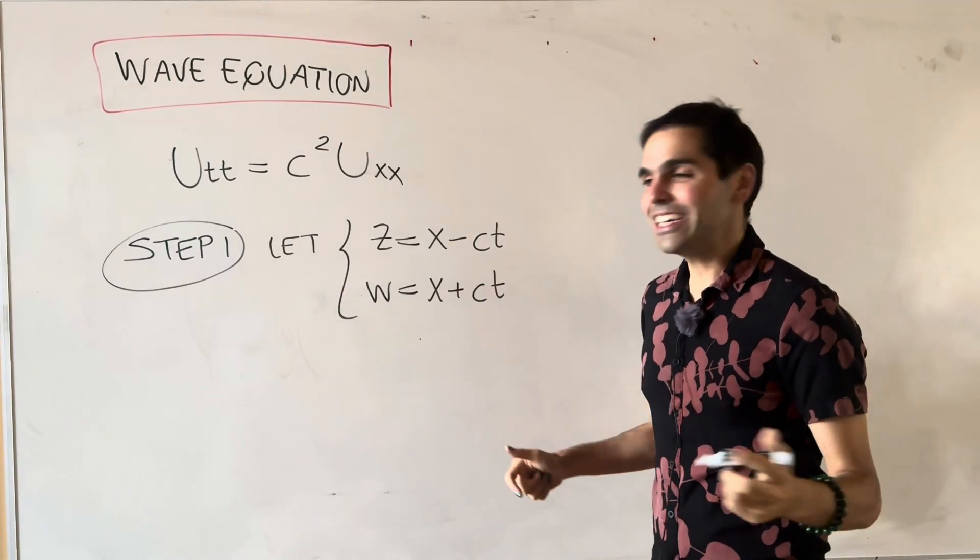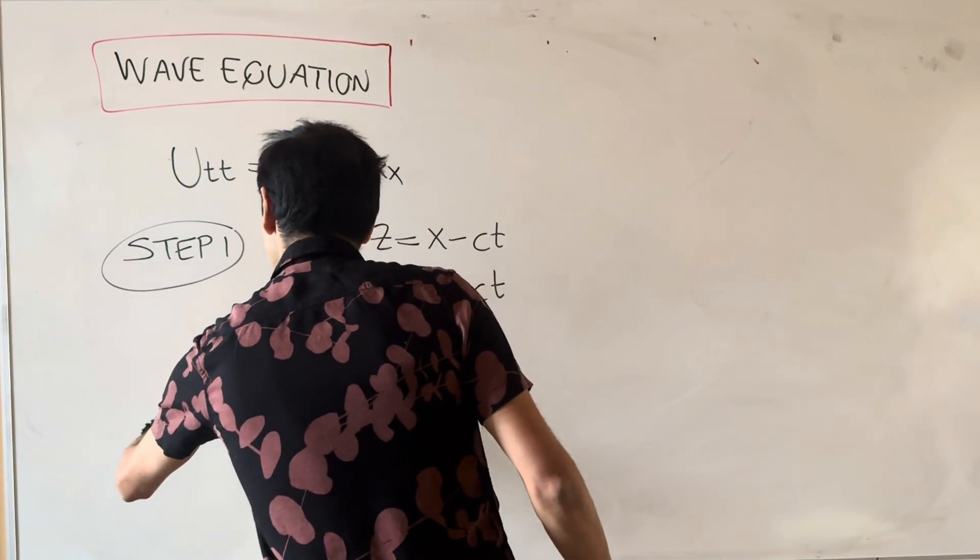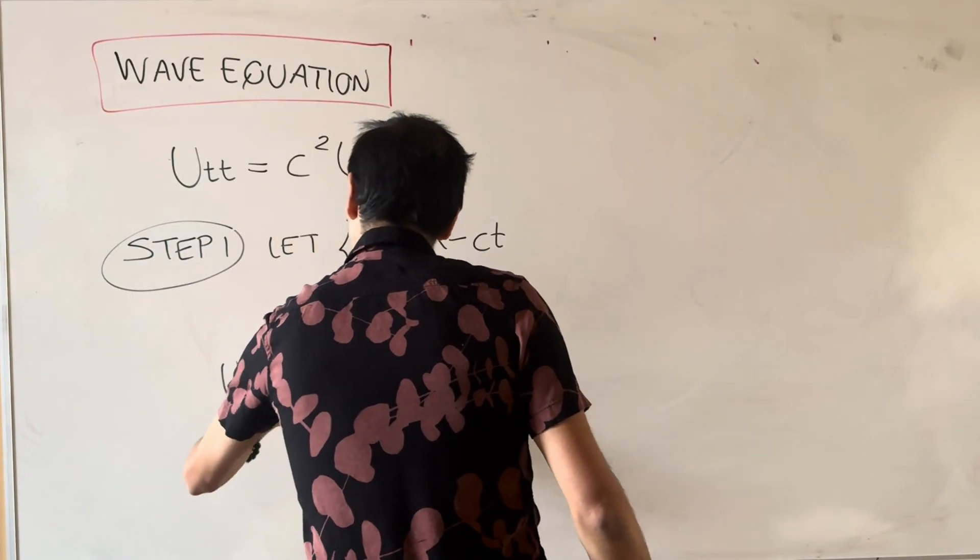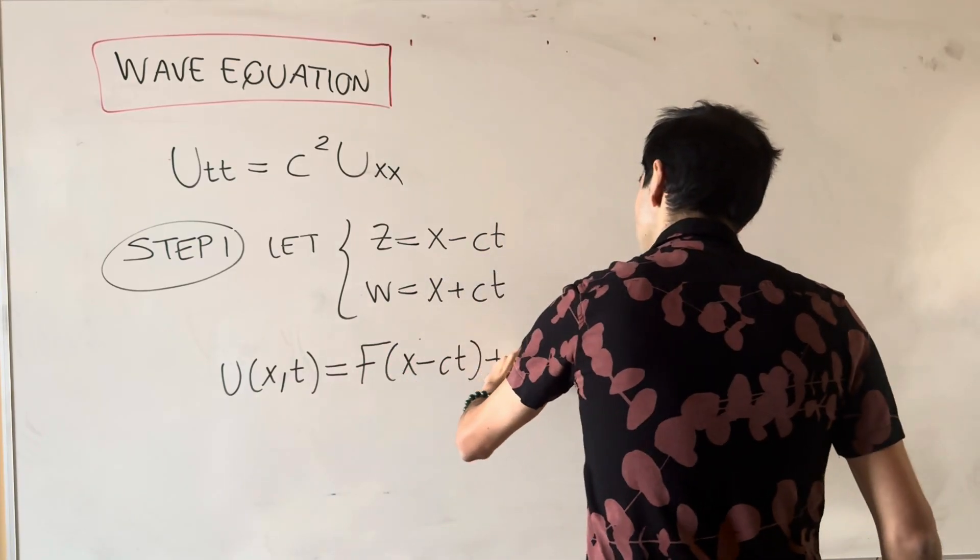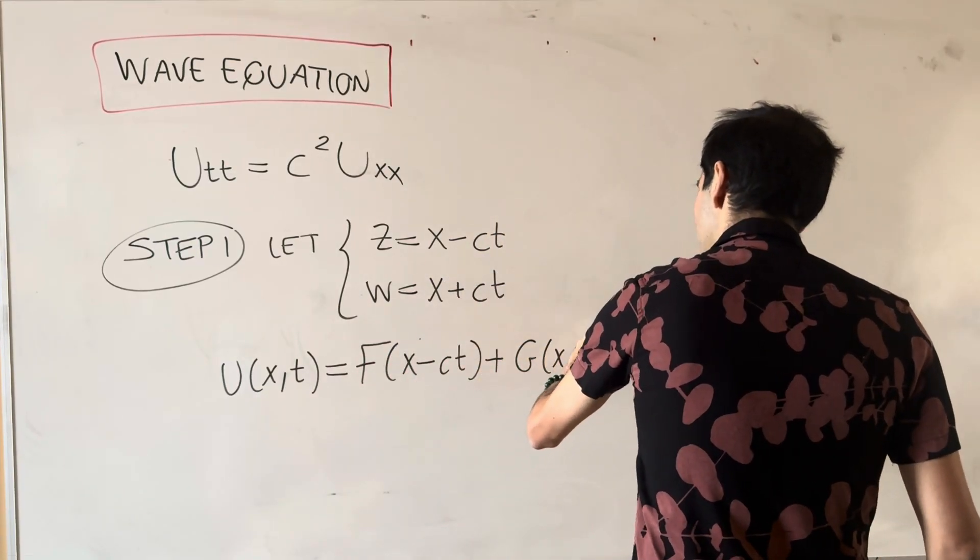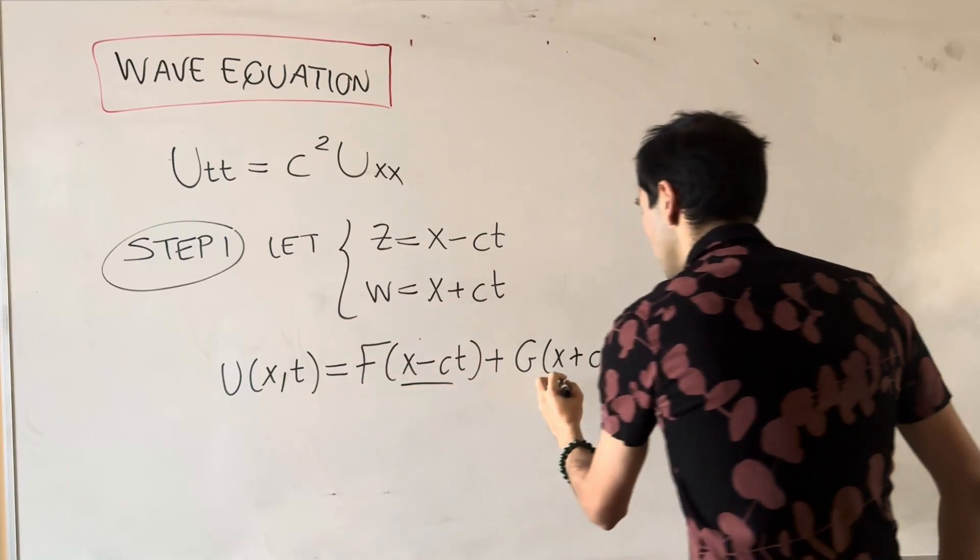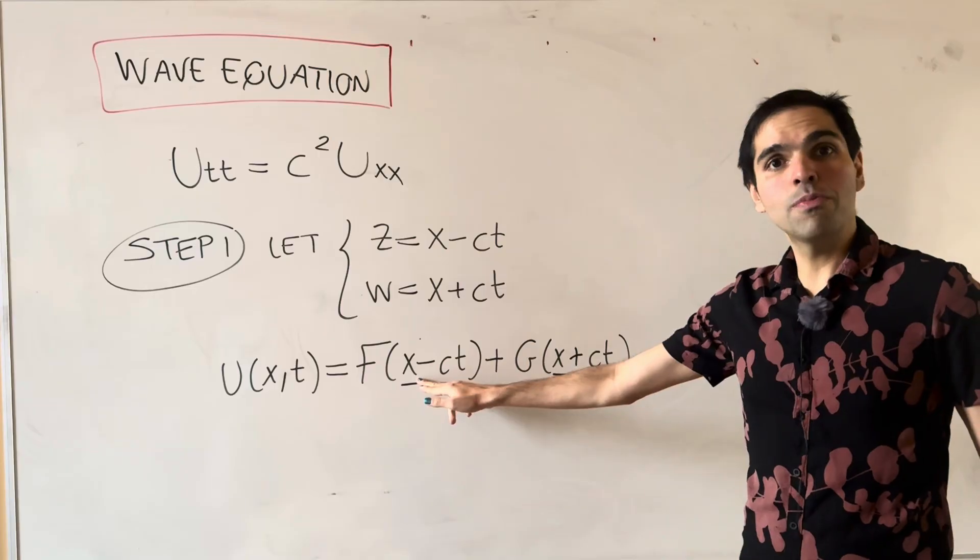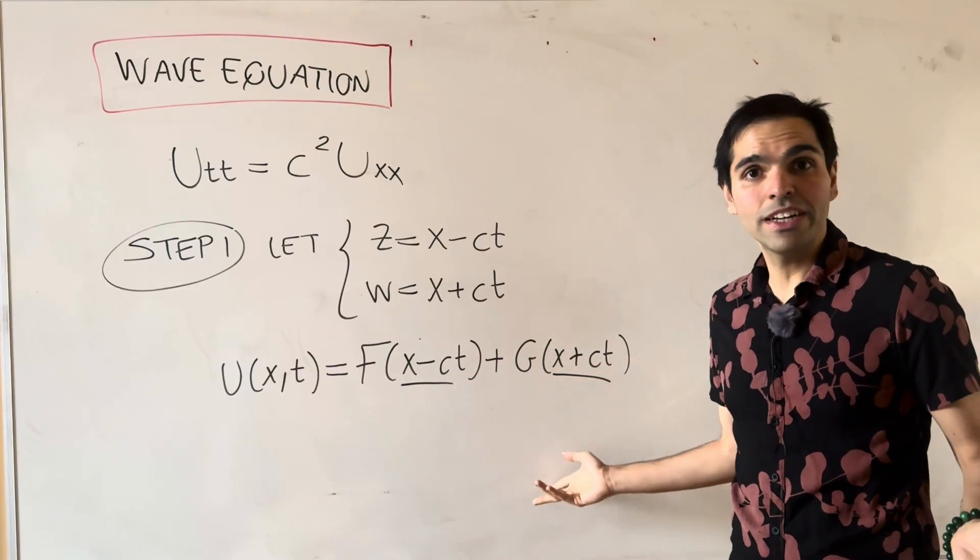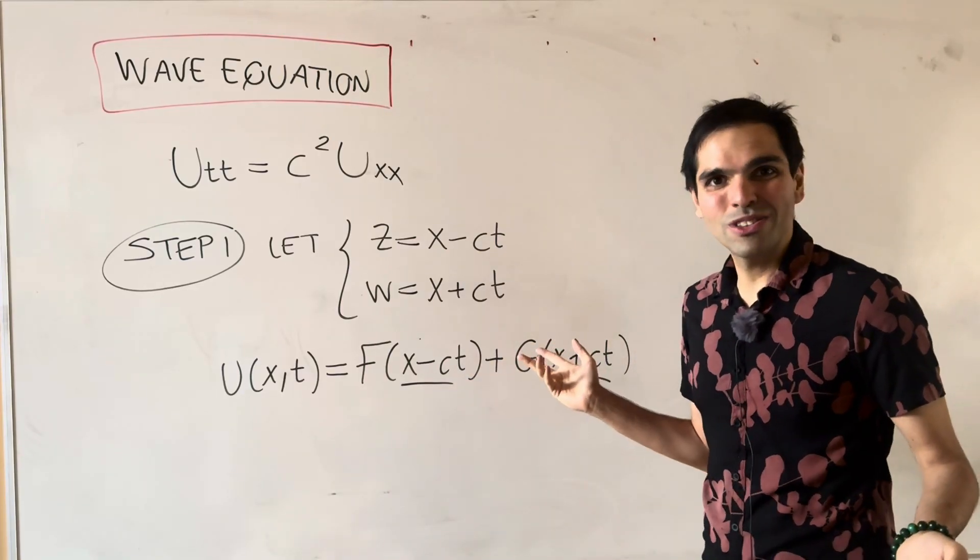Sort of by cheating, because we do know from the factoring method that the general solution is f of x minus ct plus g of x plus ct, where we have our variables x minus ct and x plus ct appearing. So it's natural to choose those.